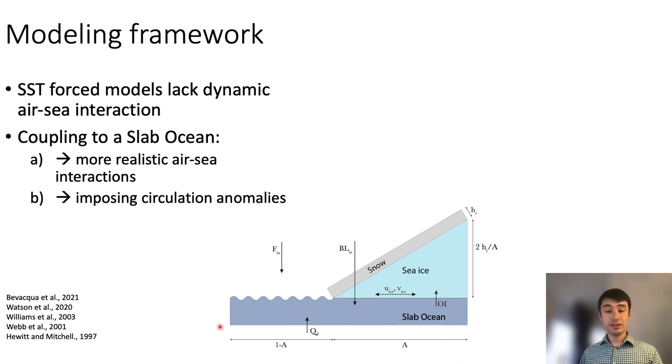We use a 50-meter depth fixed-depth slab ocean, shown at the bottom, that is forced from below with the ocean heat convergence, the Q-flux, that represents the action of the large-scale ocean circulation in the mixed layer. And at the top, we have air-sea heat fluxes that emerge dynamically from the air-sea interaction. The model also includes a simple sea-ice model where the sea ice is advected by prescribed sea-ice velocities and exchanges heat with the slab ocean.